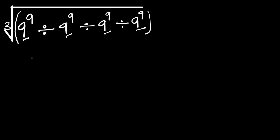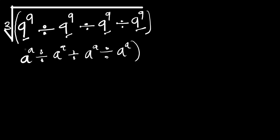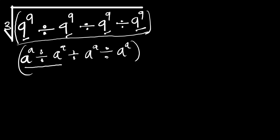Now let's consider this analogy. If you have a to the power of a, divided by a to the power of a, divided by a to the power of a, and divided by a to the power of a — this is in the form of what we have inside this cube root. Concentrate on the first two terms: a to the power of a divided by a to the power of a equals 1.